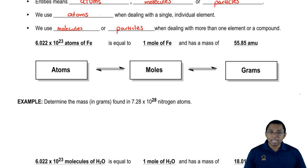If we take a look, we say we have 6.022 times 10 to the 23 atoms of iron. Iron is there by itself, so that's why we're using the term atoms.